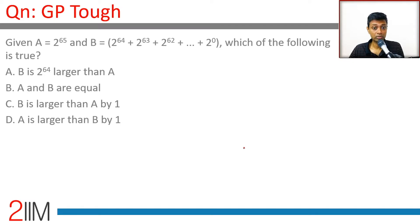A is 2 power 65, B is 1 plus 2 plus 4 plus 2 power 64, 63, 62, all the way here.